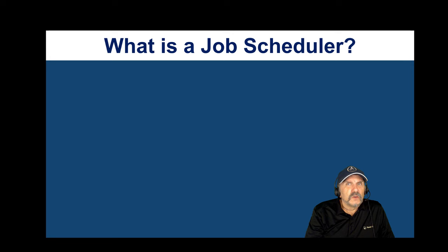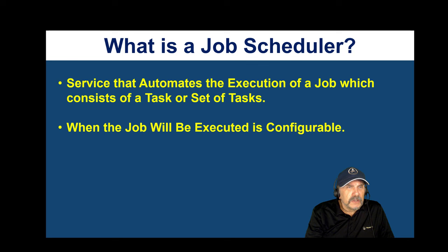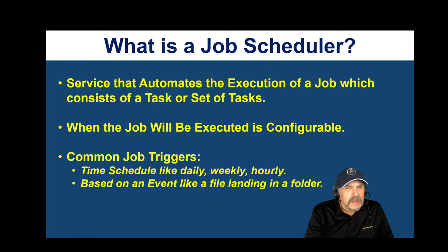A job scheduler is a service that automates the execution of a job, which may be a single task or a set of tasks. The key thing is configuring when you want the job to run using job triggers. Usually this is a time schedule — run this every Tuesday at 8 p.m., or daily at 5 p.m., or every 15 minutes. Sometimes you base it on an event, like a file landing in storage, a folder, or an FTP server.